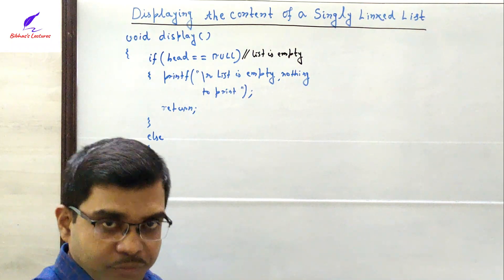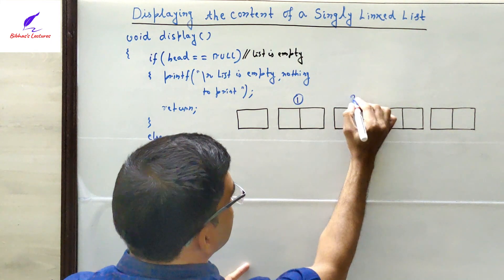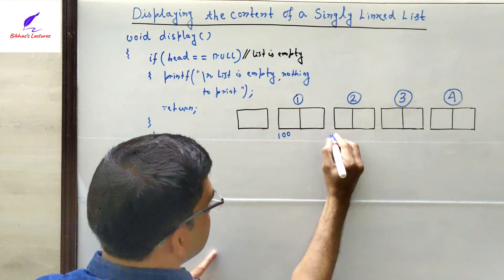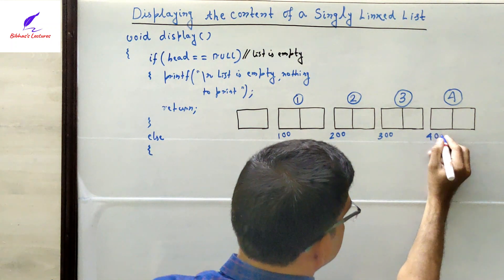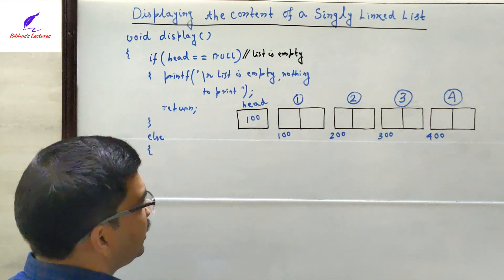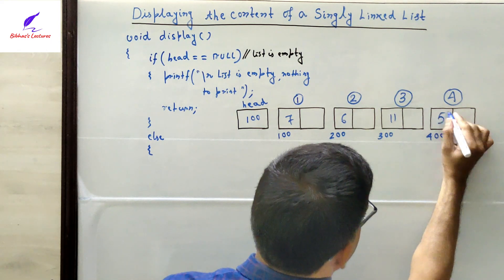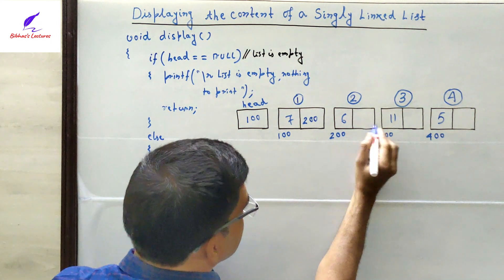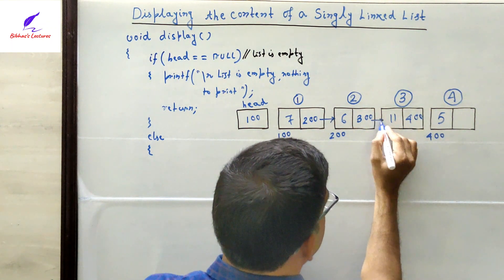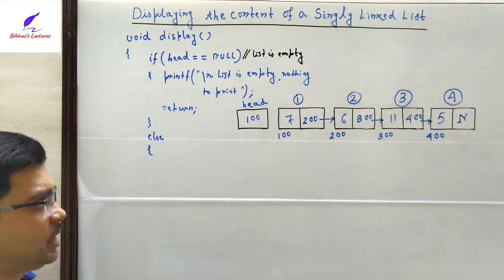Let's draw an existing list with four nodes. Suppose the addresses of these nodes are 100, 200, 300, and 400. The head pointer contains 100 (the address of the first node). The data parts contain integer values 7, 6, 11, and 5. The next parts connect them: 100→200, 200→300, 300→400, and 400's next part contains null since it is the last node.